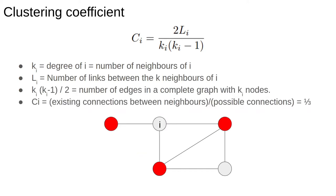The denominator is the number of edges in a complete graph with ki nodes. Hence Ci is a ratio between the number of edges which do exist between the neighboring nodes versus the number of edges which could exist. In this case it's 1 over 3.